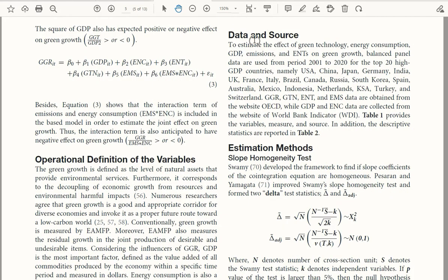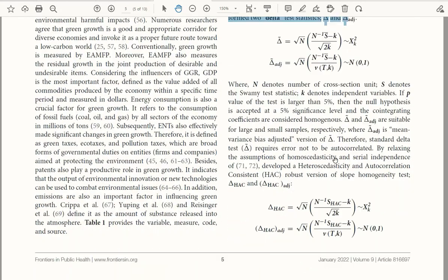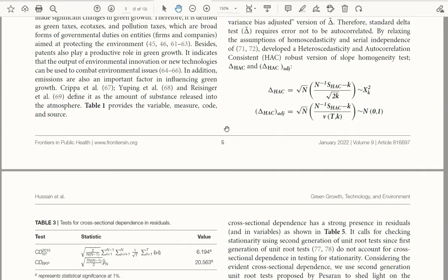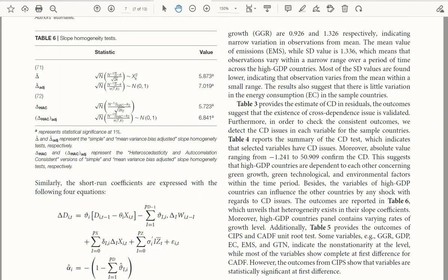In the data and source, the very first test that is applied for estimation is the slope homogeneity test. These are the authors that contributed to this test. Here it is applied. As you can see the test has been conducted.